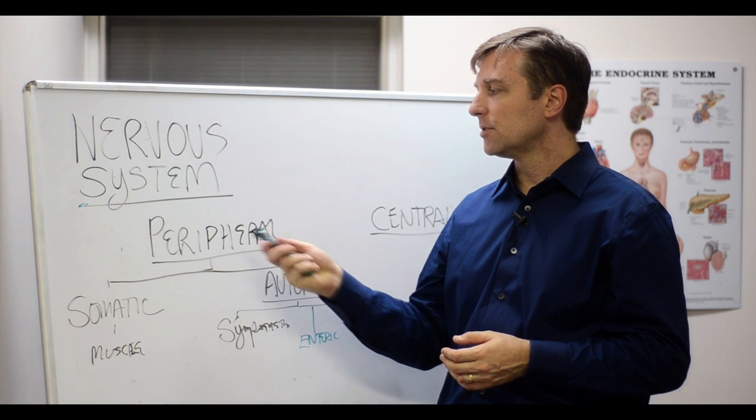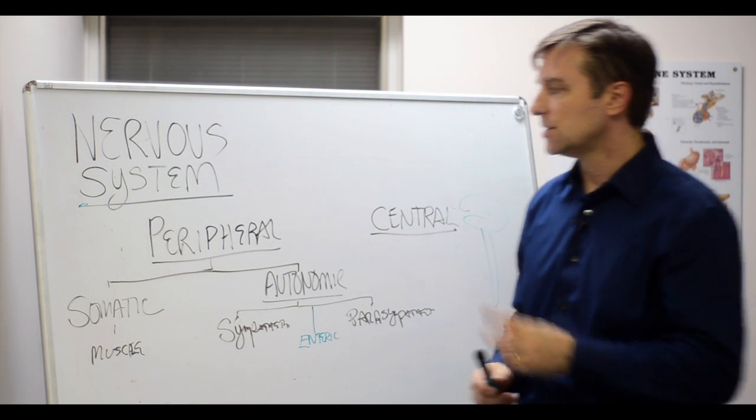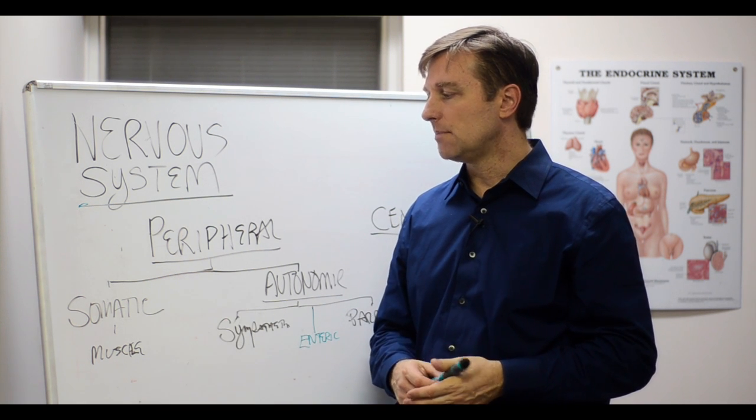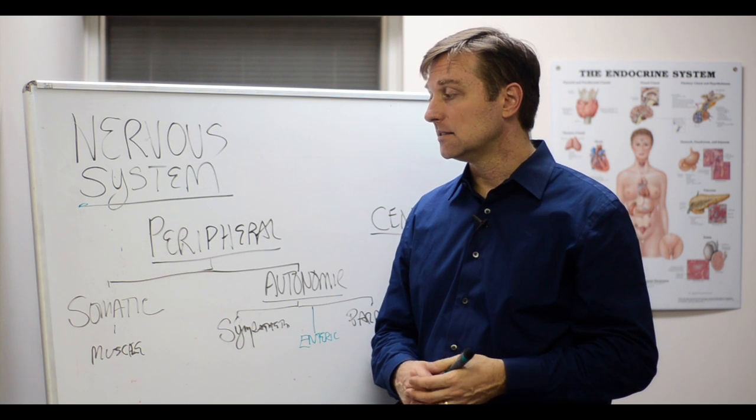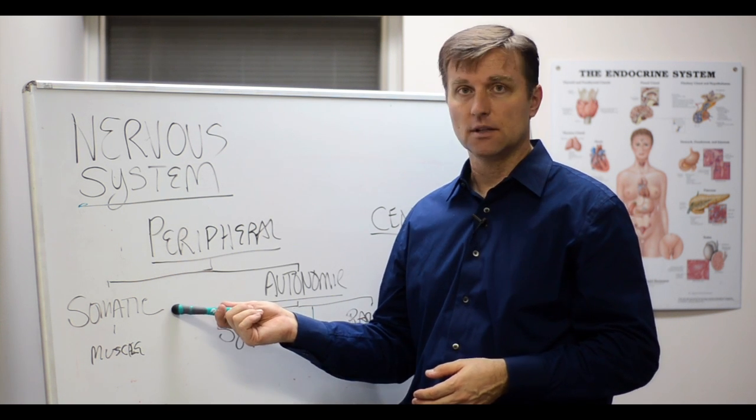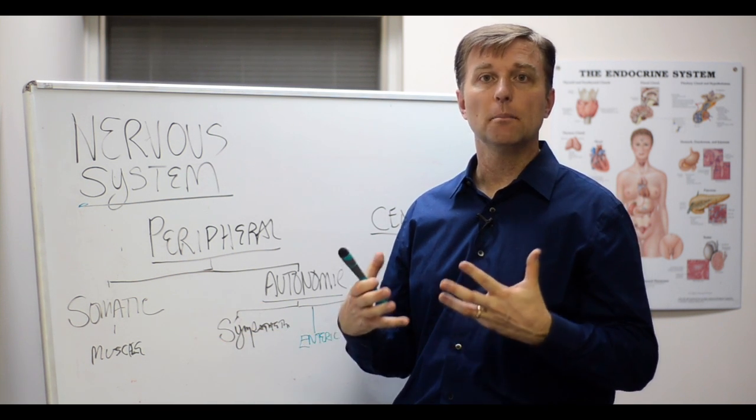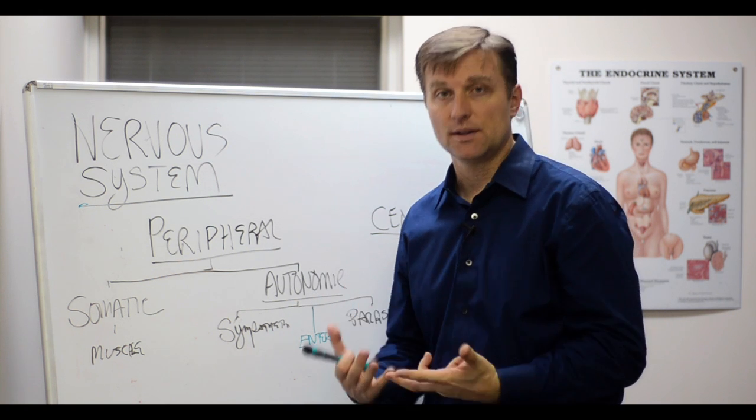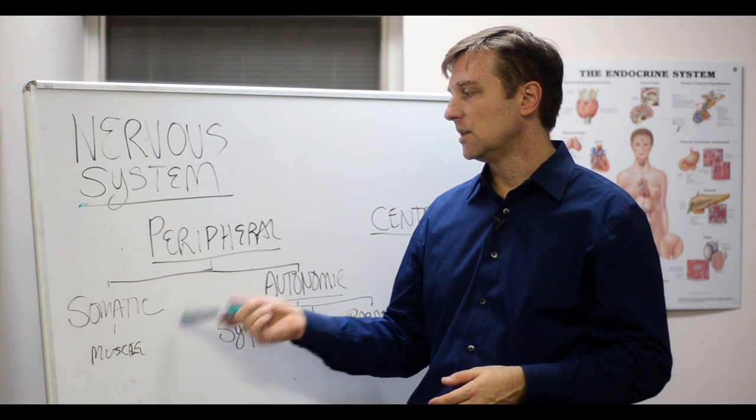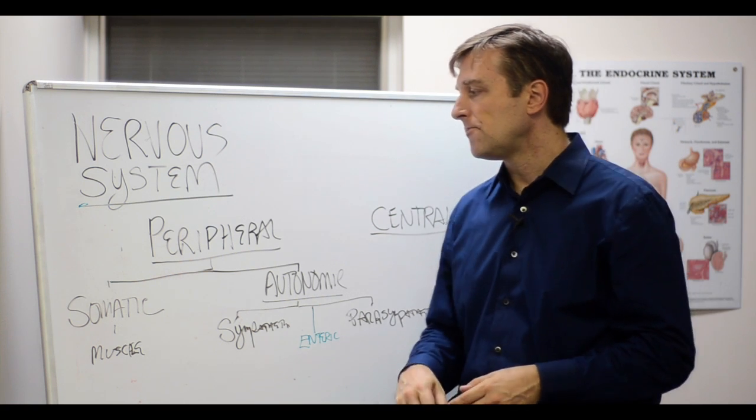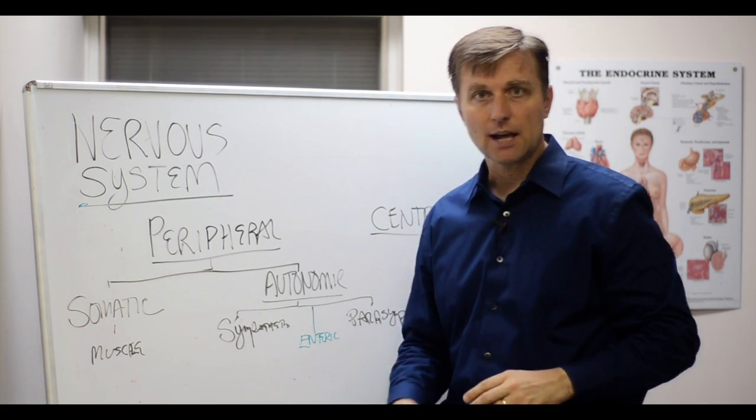The peripheral nervous system has two parts. One is the somatic, which somatic means body in Latin, but the somatic nervous system controls all the muscles. So skeletal muscles and smooth muscles. And then we have another part of the peripheral nervous system called the autonomic nervous system. This is what I want to spend a little bit more time on.